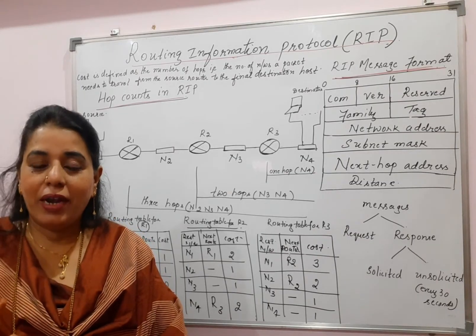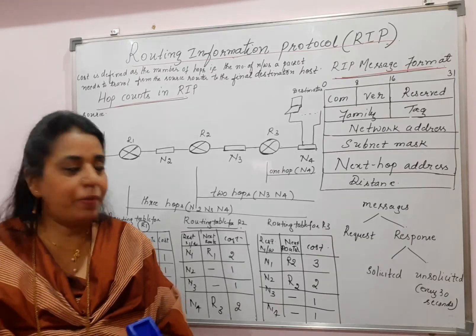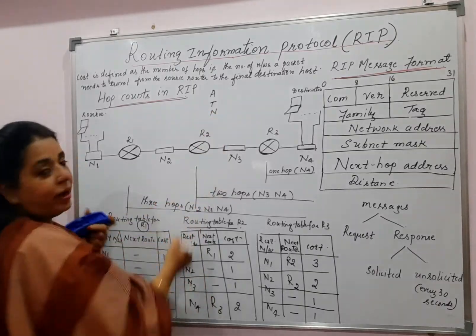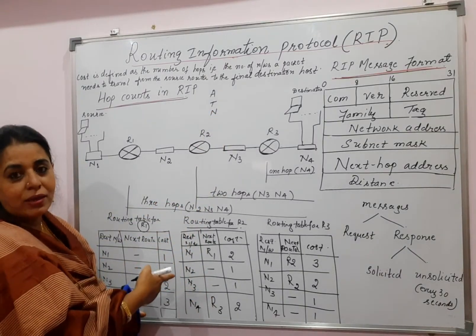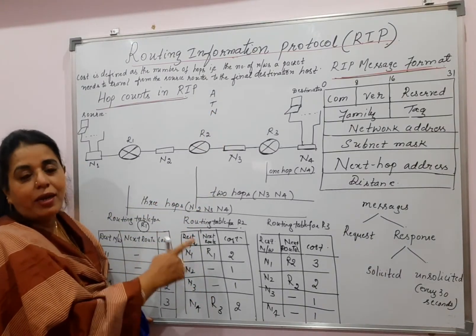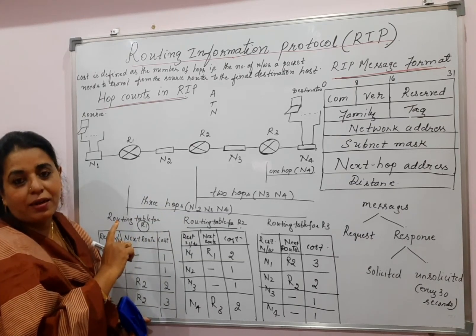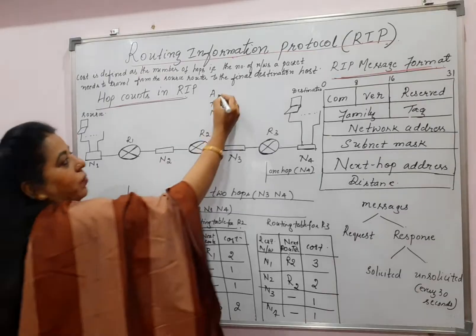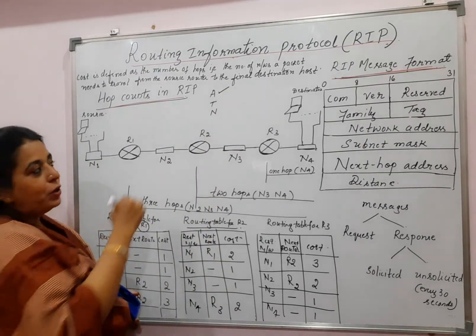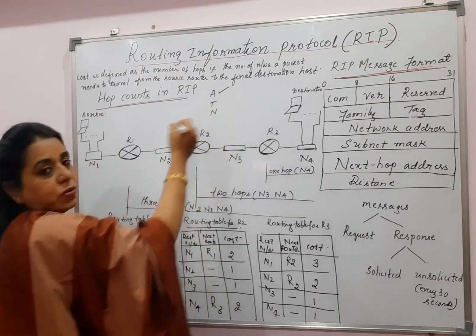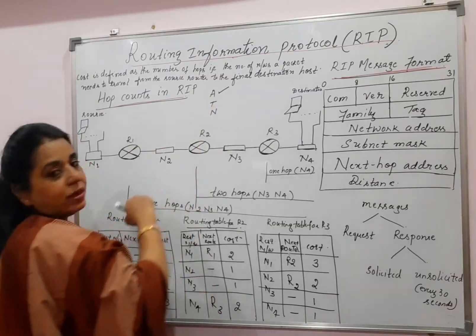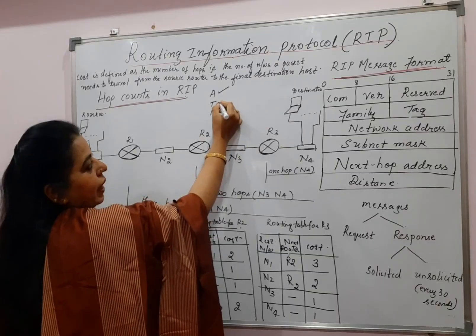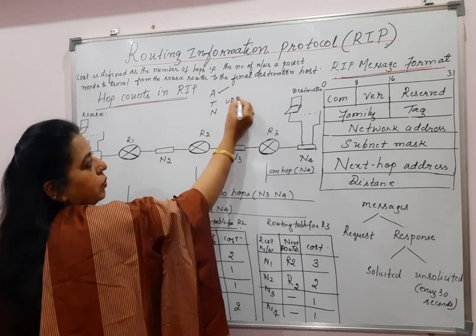Since RIP runs at the application layer, it definitely needs a protocol at the transport layer to encapsulate its messages. Hope you remember — application layer, transport layer, and network layer. At present, in the network layer, the routing tables for the routers are getting constructed. RIP works at — runs at the application layer. So it makes use of the protocol present in the transport layer. All the messages of RIP are encapsulated in UDP — User Datagrams.